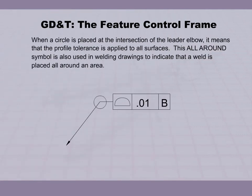When a circle is placed at the intersection of the leader elbow, it means that the profile tolerance is applied to all surfaces. This all-around symbol is also used in welding drawings to indicate that a weld is placed all around an area.